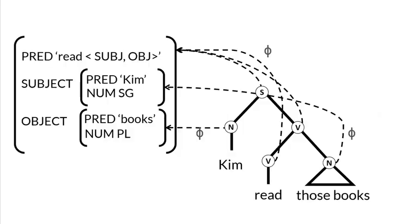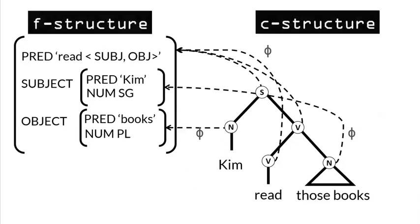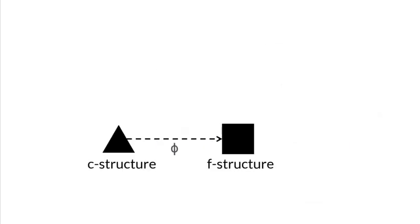In these videos we've discussed some of the basic elements that make up the representations of constituent structure and functional structure in Lexical Functional Grammar. These two modules are more commonly known as C-structure and F-structure, and were the first two modules proposed for a syntactic representation in LFG, but the model can be expanded to include other modules that represent other aspects of grammar.